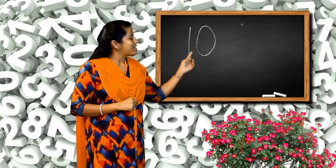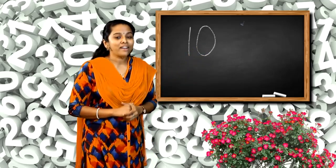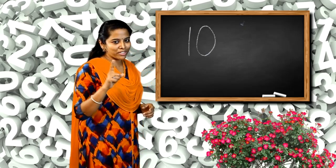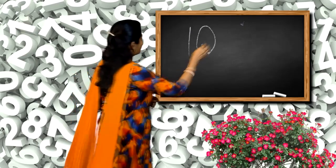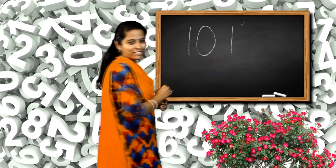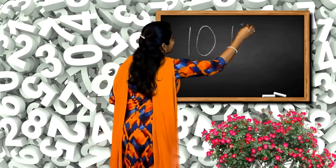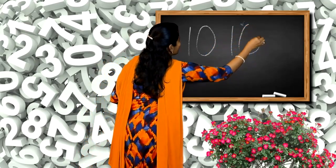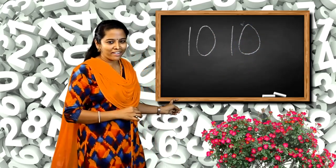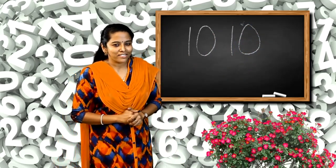1, 0 means the number 10. One more time: 1, 0, 10. Very easy to write.